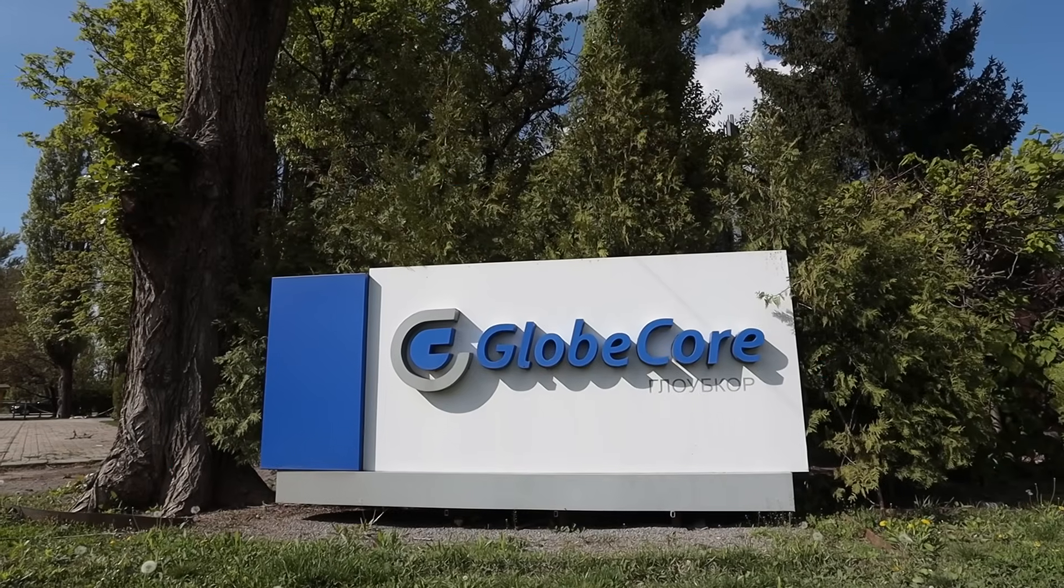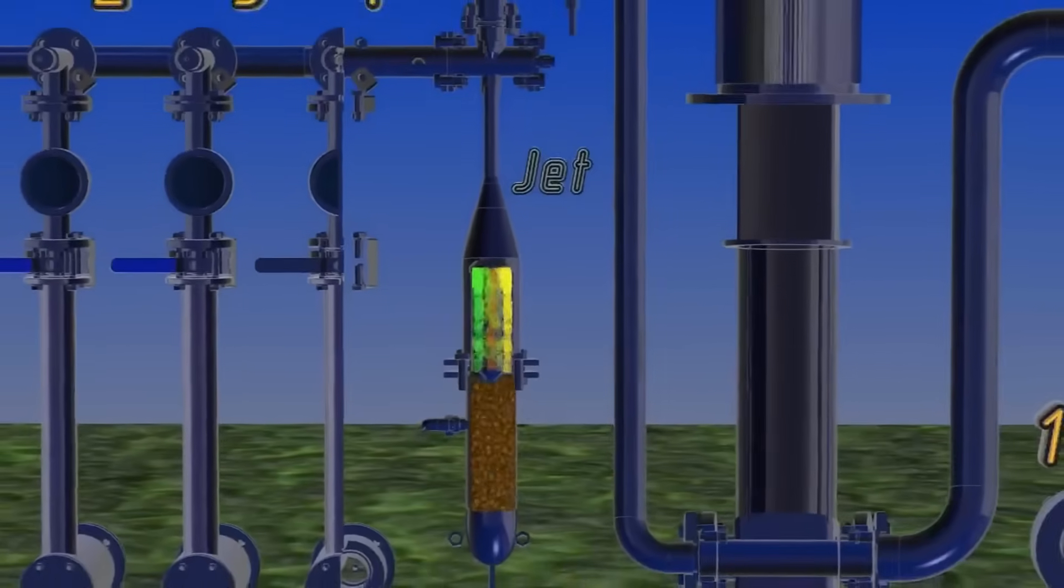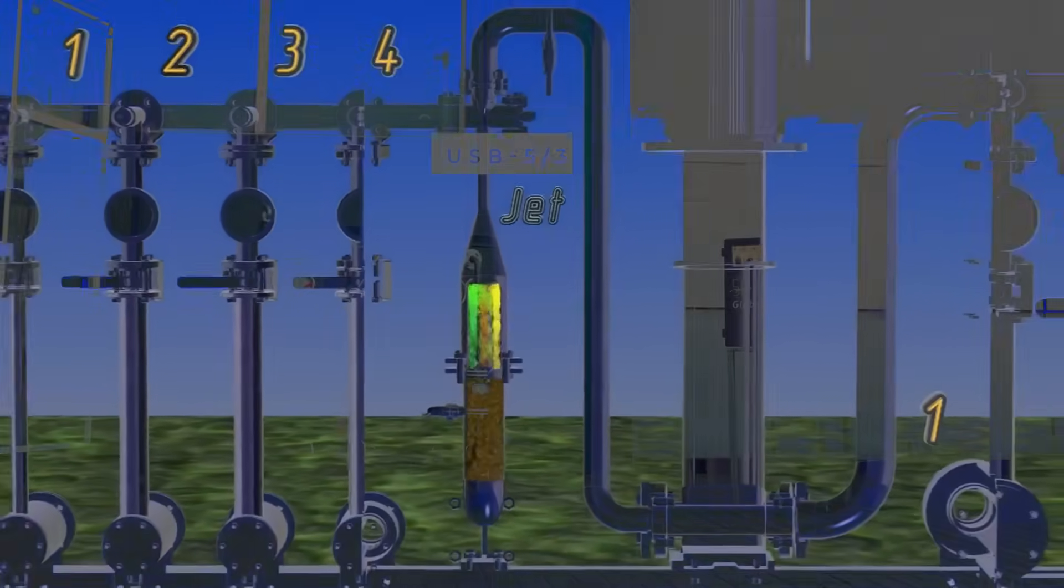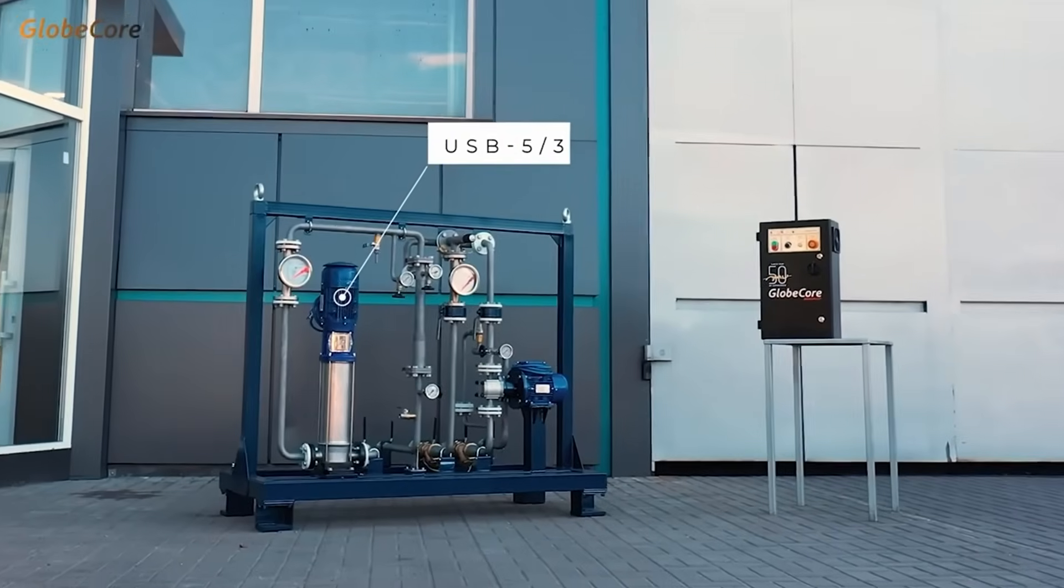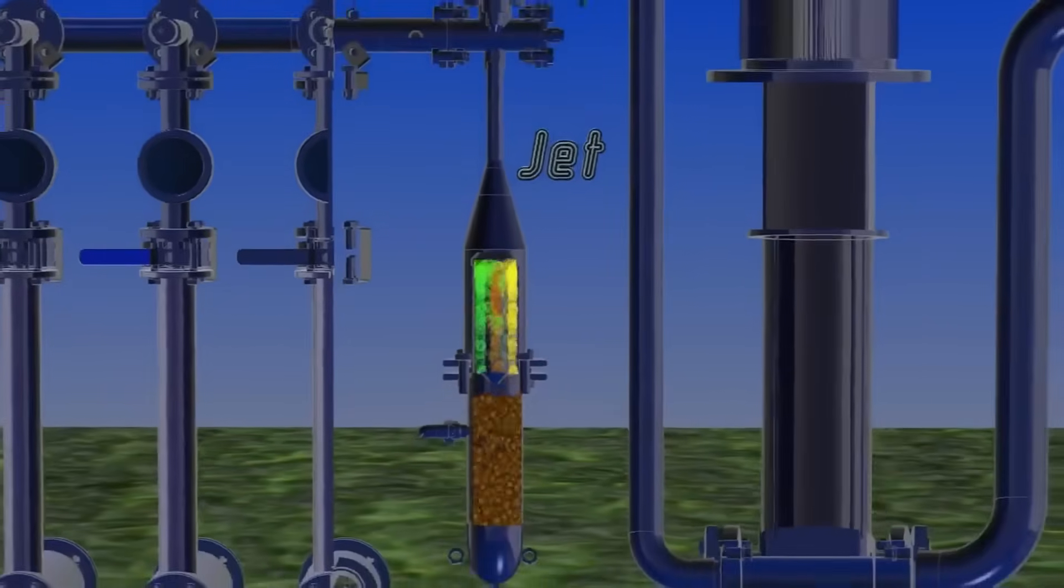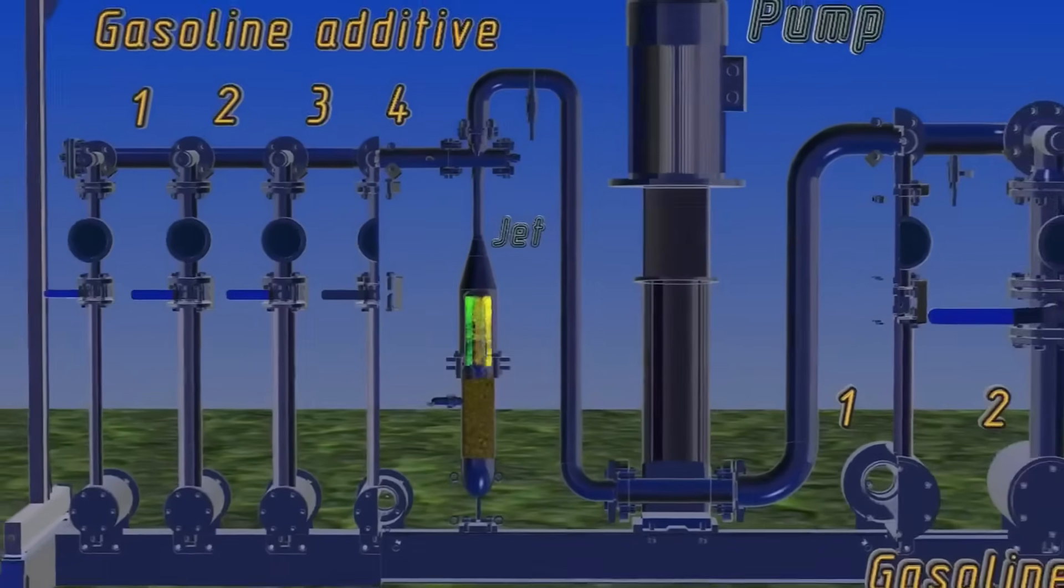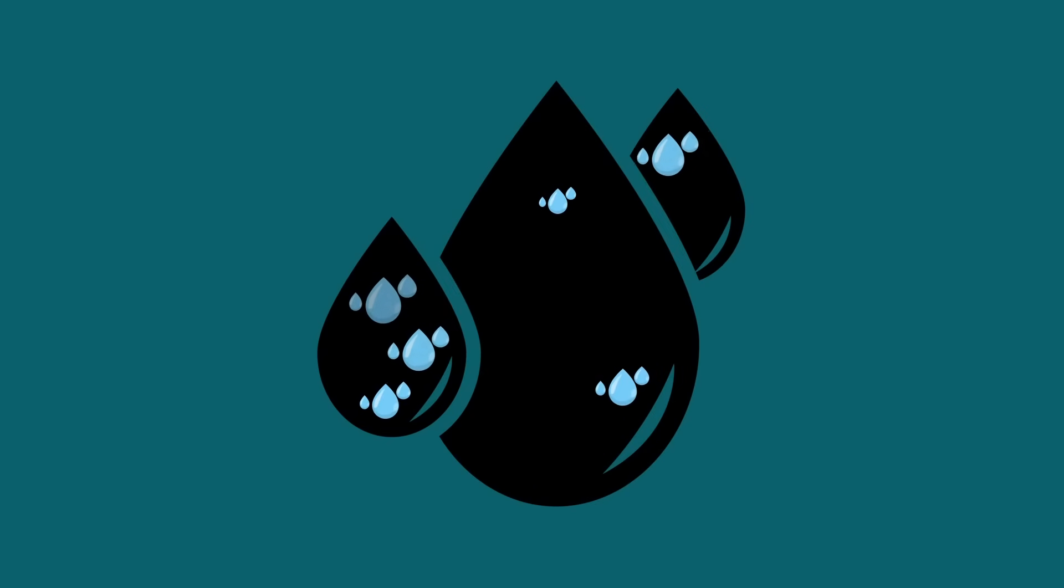To solve this problem, Globe Core company has developed the technology of hydrodynamic cavitation blending, which is implemented in the USB type homogenizers. The principle of their functioning is based on subjecting the crude water fuel oil mixture to hydrodynamic impact, strong turbulence, and intense blending in the turbulent flow.